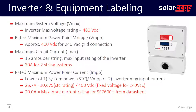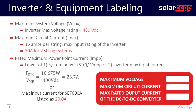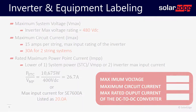The inverter will current limit the system and never exceed 20 amps. In the 2017 code, this label requirement changed just a bit. We are no longer required to put the VMP on the label, so all we need is VMAX, IMAX, and IMP.